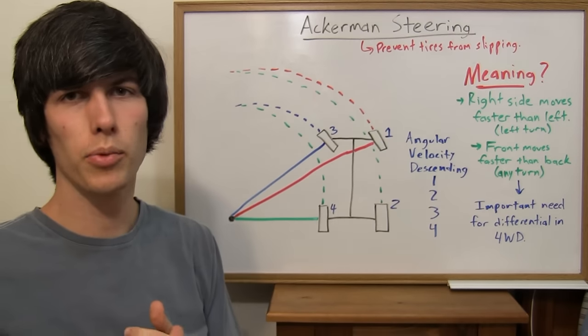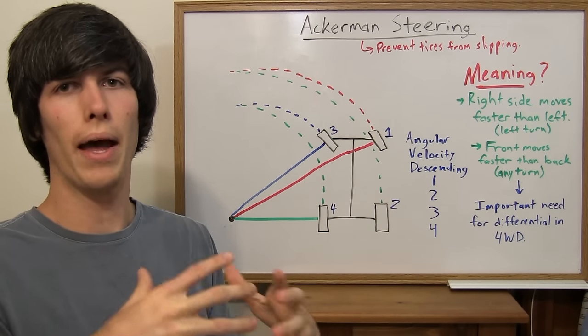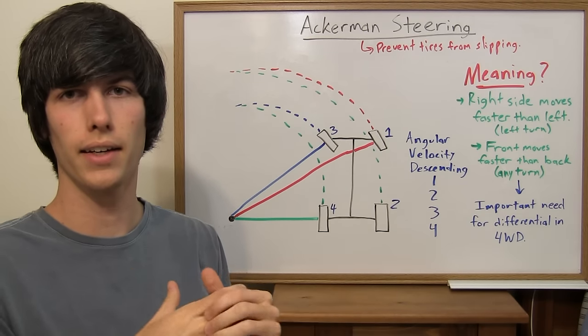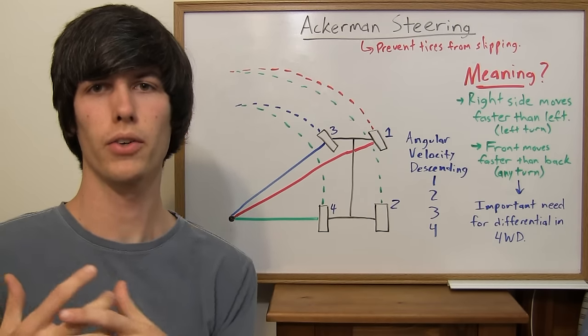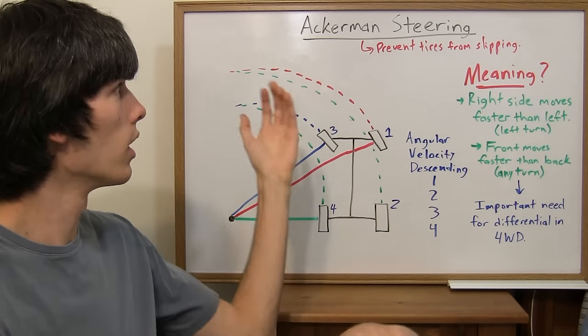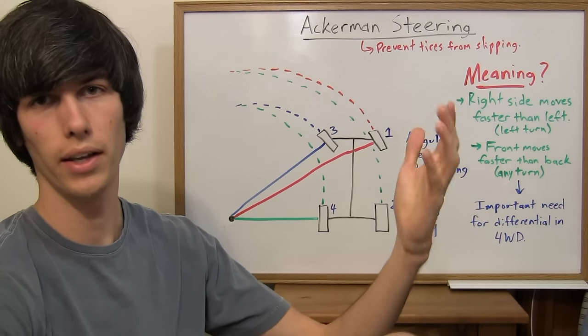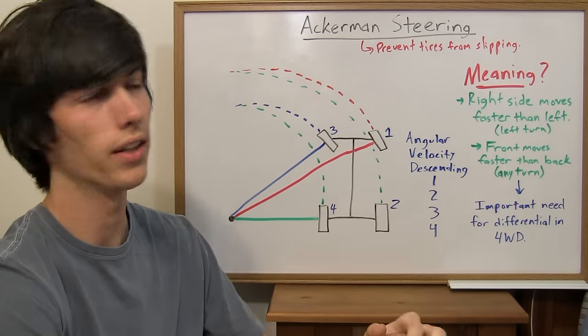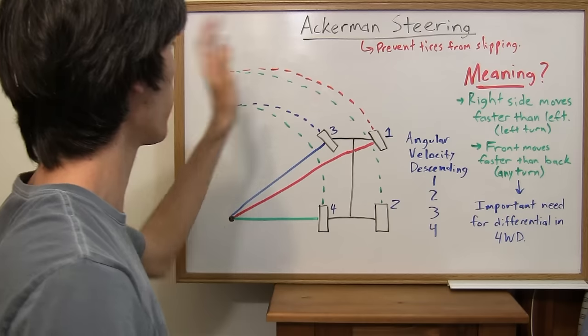The name Ackermann comes from a guy named Rudolf Ackermann, who was the guy who patented this idea. The problem was it wasn't his idea. There was a German inventor that came to him. He was a lawyer, Rudolf Ackermann, and so he patented the idea, but somehow his name got placed on it. I'm sure he did that, but it's not really his idea. Anyways, he's got the name.